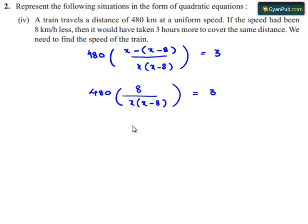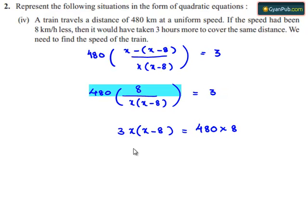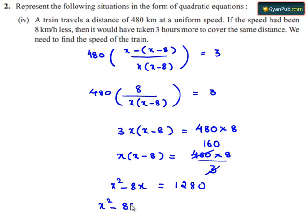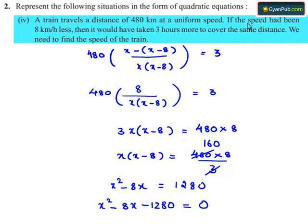On cross multiplication, we get 3 times x times x minus 8 equals 480 times 8, which gives 3x² minus 24x equals 3840. Dividing through and simplifying, the equation can be expressed in the form of the quadratic equation: x squared minus 8x minus 1280 equals 0.